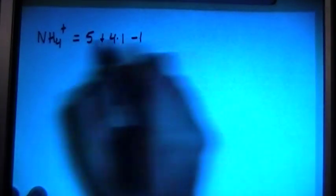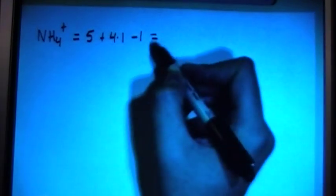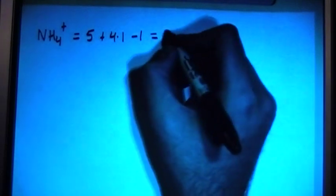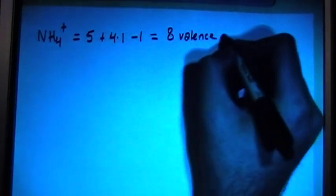The electrons brought in: we have 5 from the nitrogen, plus 4 times 1 each for each hydrogen, minus 1, which is because of the plus in the ion. Because ammonium is a cation, plus 1, so you subtract 1 electron because it's losing an electron. So the total number of electrons here is going to be 8 valence electrons.